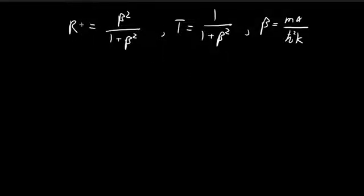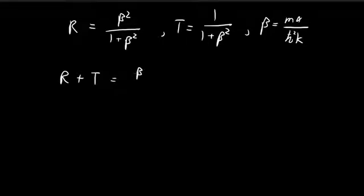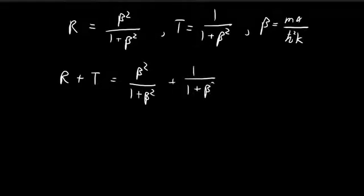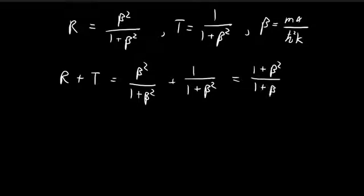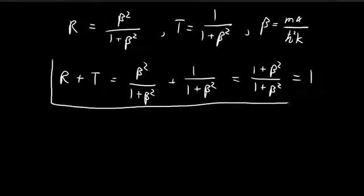So this is where we left off in the last video. We found the reflection coefficient and we found the transmission coefficient. So now let's try to interpret these results. First of all, notice that r plus t is actually equal to 1. This makes perfect sense because r is the fraction of the wave that ends up bouncing backwards, and t is the fraction of the wave that ends up traveling onwards. Since the wave either bounces backwards or keeps on going, both of these fractions should add up to equal 1, and this is indeed the case.